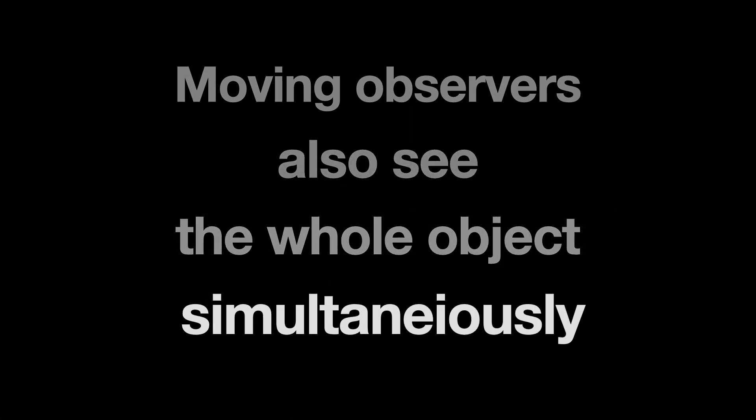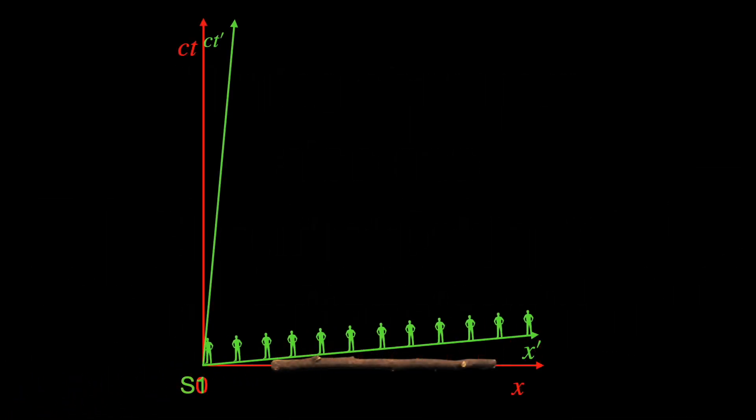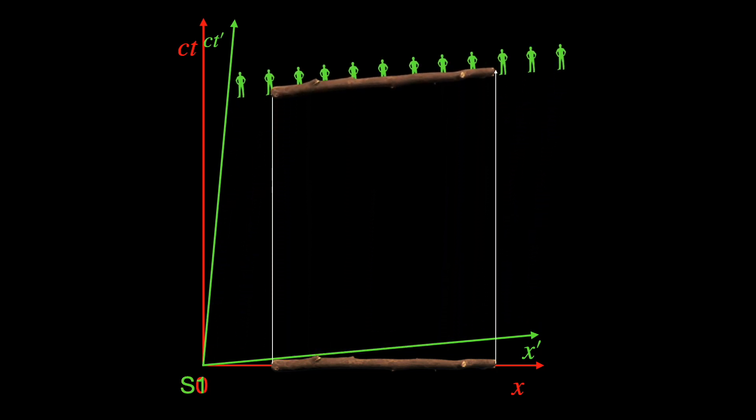Now what about the length measurement in the moving frame S1? In our space-time diagram the x' and ct' axis of S1 frame appear tilted at an angle tan⁻¹(v/c) with respect to our x and ct axis respectively since the relative speed between S0 and S1 is v. Also its observers appear to move parallel to the ct' axis. Why? You should know why if you have watched my earlier videos. So do watch them. Anyway as we explained earlier these moving observers also see all parts of the stick simultaneously at every instant.